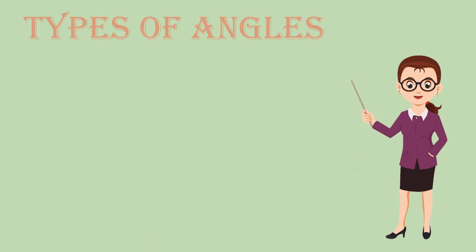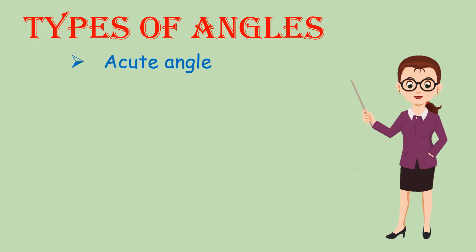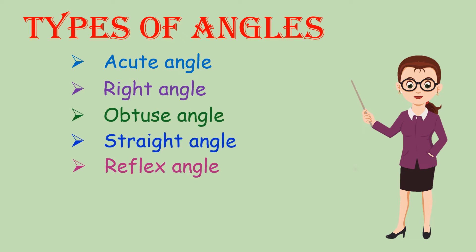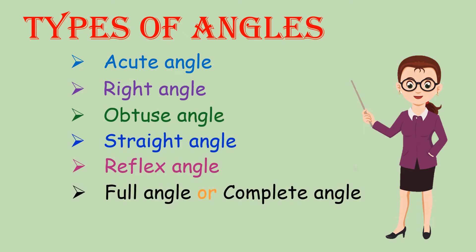Types of Angles. Angles are classified according to their measures. There are six types of angles: Acute Angle, Right Angle, Obtuse Angle, Straight Angle, Reflex Angle, and Full Angle or Complete Angle.